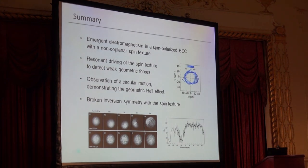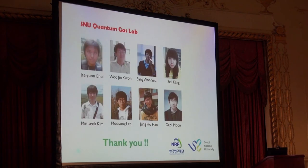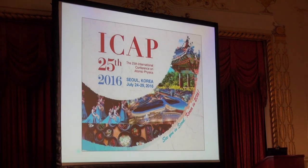In summary, I presented a very simple setup where, due to the spin texture in the magnetic trap, one can detect an effective magnetic field and Lorentz force. With linear driving, we observe circular motion of the condensate, and we checked the broken inversion symmetry with the spin texture using elliptical driving. We are living in Seoul, and two years from now we will have ICAP in Seoul — I would like to welcome all of you to the next ICAP in Seoul. Thank you so much.